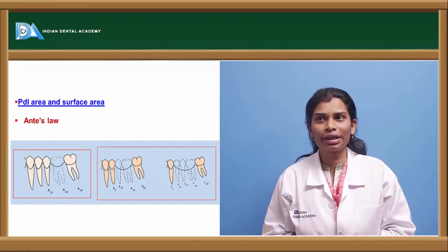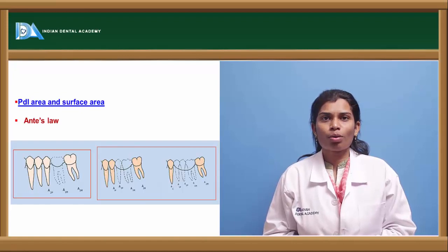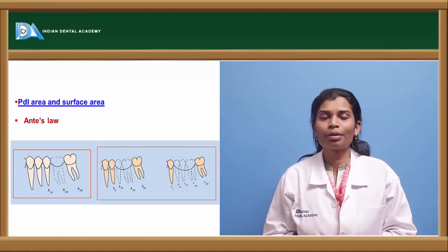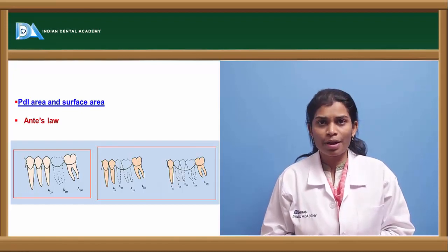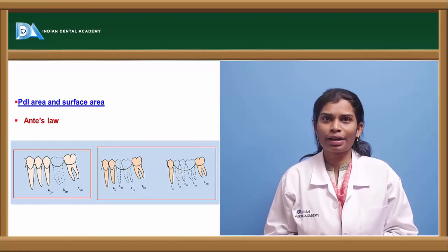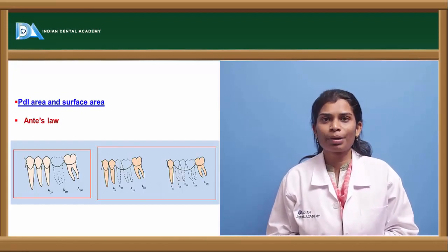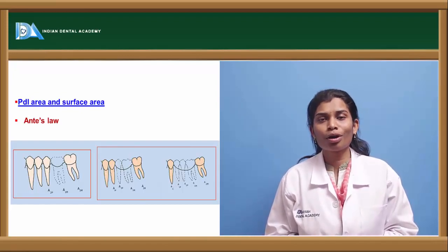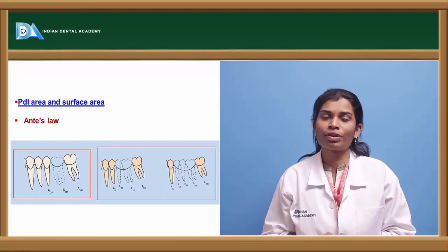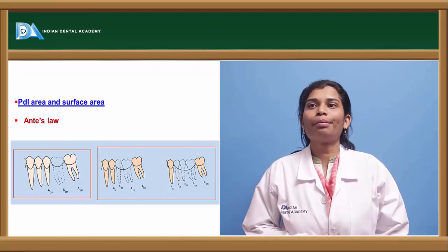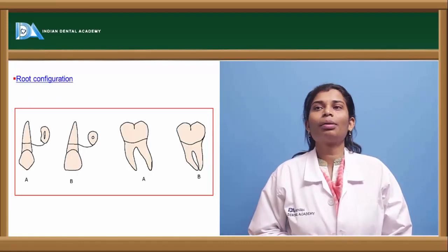Coming to periodontal ligament area — a law widely followed in abutment selection states that the total pericemental area of the teeth being used as abutments should be equal to or greater than the total pericemental area of the teeth that are missing. It is very important to satisfy this law, known as Ante's Law.